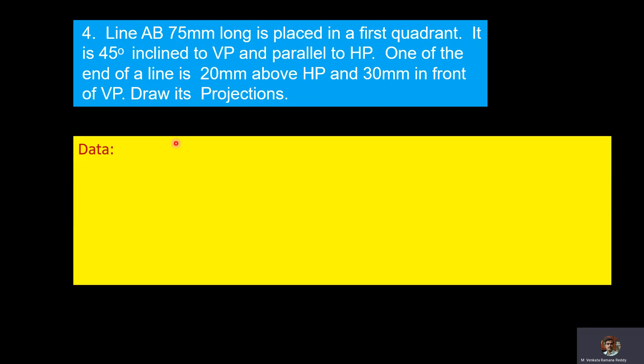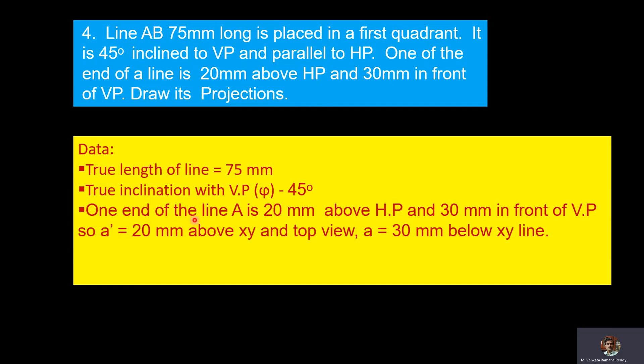As a first step, we will write the data. Here, true length is 75 mm. True inclination with VP is 45 degrees. One end of the line, A, is 20 mm above the HP and 30 mm in front of the VP. So A' is 20 mm above XY and A is 30 mm below XY line.